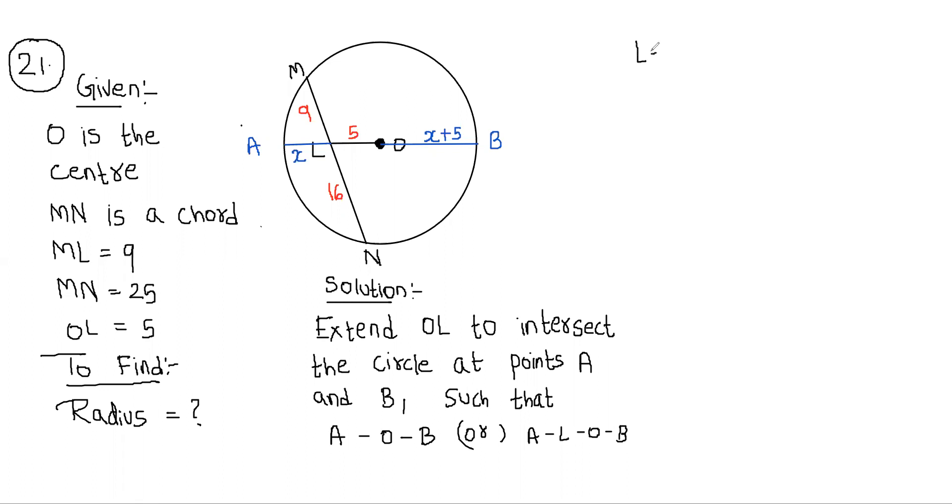Now we are going to assume let AL is equal to X. So let us find OA. Therefore OA, what is OA? OA is OL plus AL in bracket, reason since A-L-O they are in a straight line. Therefore OA is equal to OL, which is given as 5, AL we assume as X. So in the next step I want to write it as X plus 5.